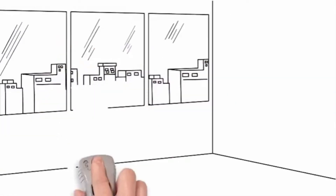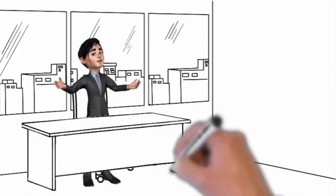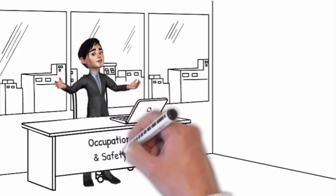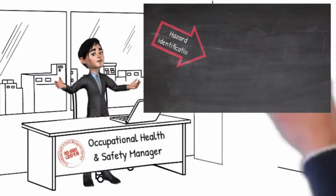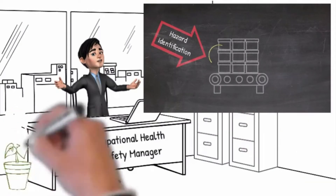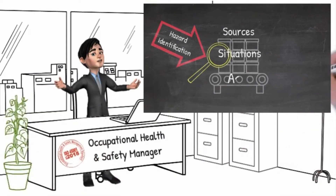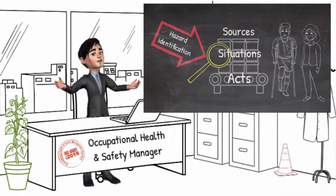In this episode of ISO 45001 we are going to review how to identify hazards and prevent or minimize the incidents. The process for hazard identification should determine proactively all sources, situations, and acts arising from an organization's activities, with a potential for harm in terms of injury or ill health.